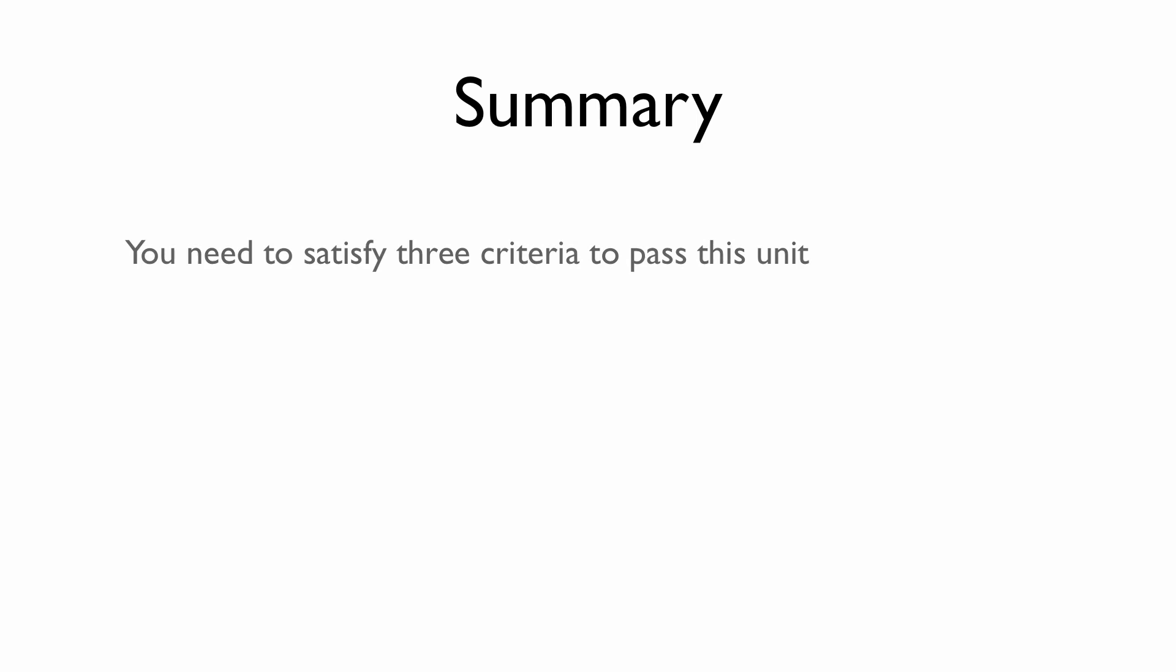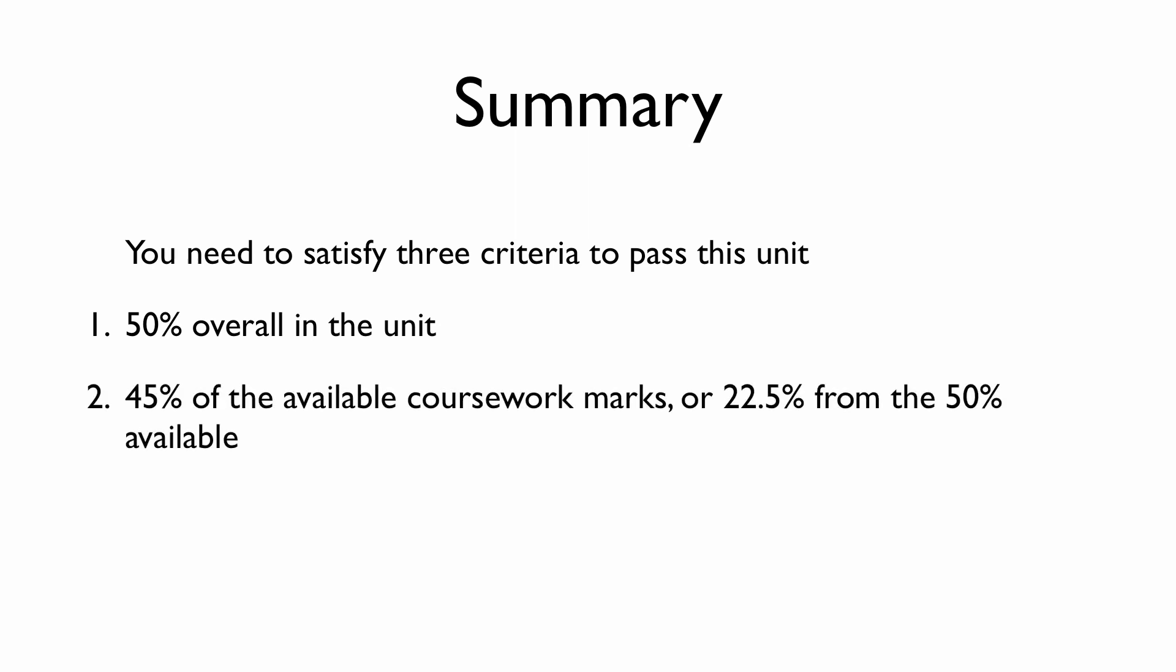In summary, there are three criteria to pass this unit. Firstly, you must get 50% as a minimum overall in the entire unit. Secondly, you must get a minimum of 45% of the available coursework marks, which is equivalent to 22.5% of the available 50%. And finally, you need to get a minimum of 45% of the available final exam marks, which equates to 22.5% from the 50% available.